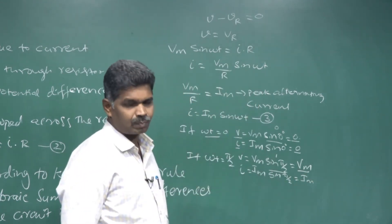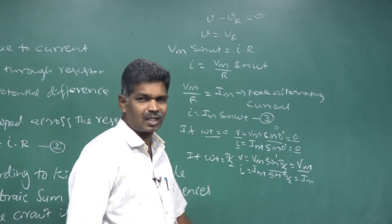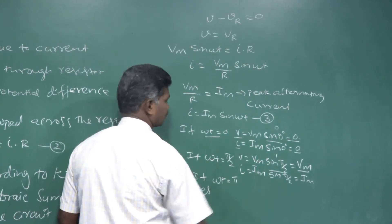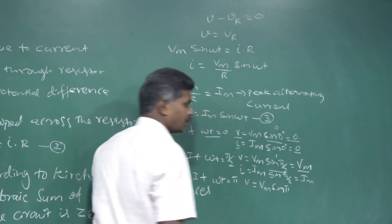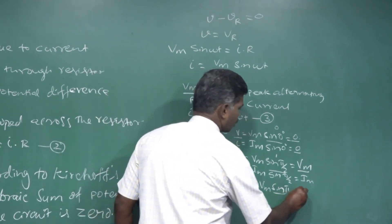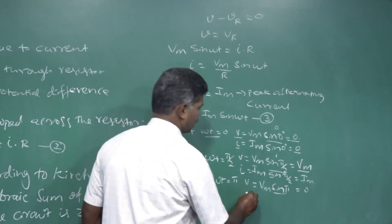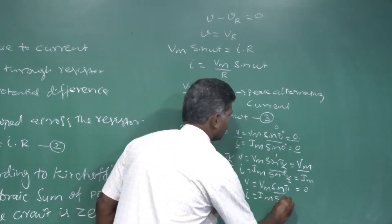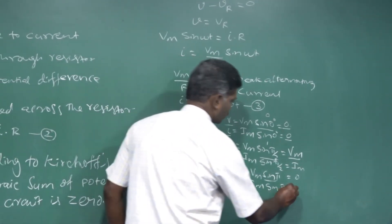Now we substitute ωt = 180 degrees, that is π. V = VM sin(π). Since sin(180°) = 0, the instantaneous EMF at this angle is also zero. For current: I = IM sin(π) = 0. So at ωt = π, both the instantaneous current and voltage are zero.